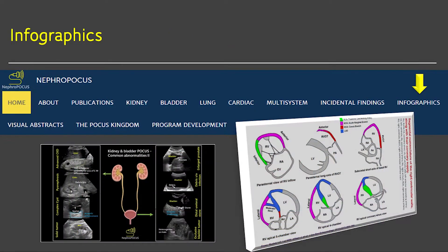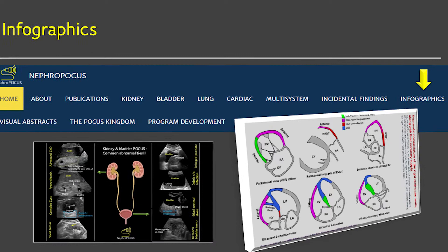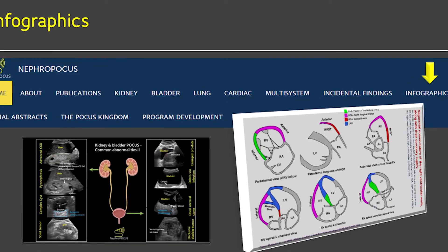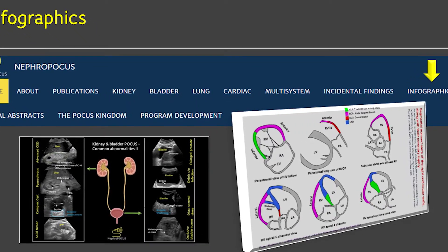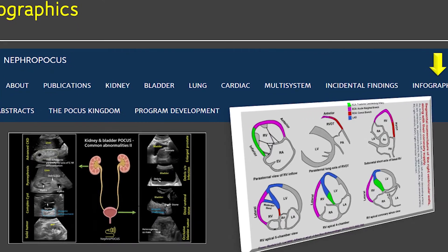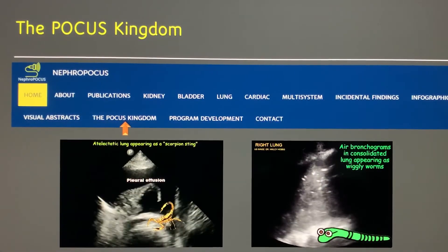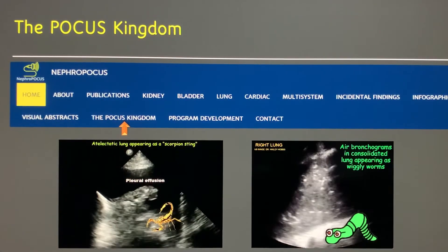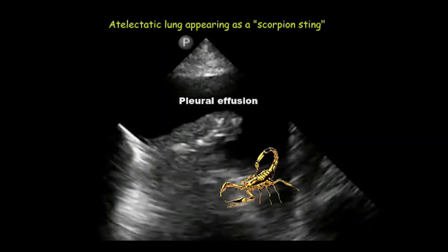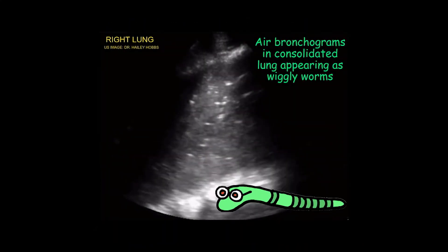In the infographic section, you will find interesting and informative POCUS flashcards. For example, if you want to quickly review the guidelines for cardiac chamber quantification, this is the place to look. The POCUS Kingdom is a fun place where you will find metaphors and eye-catching analogies of ultrasound images with animals and familiar objects.